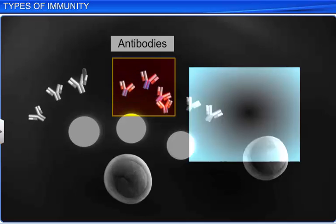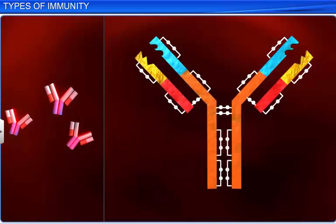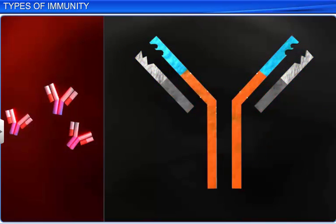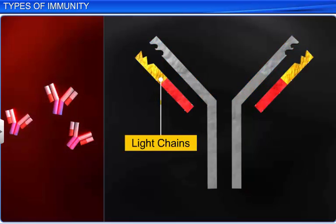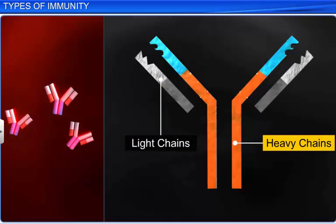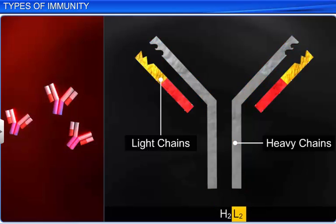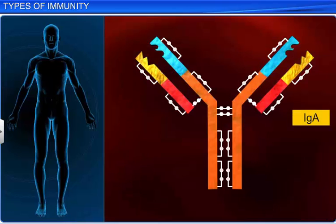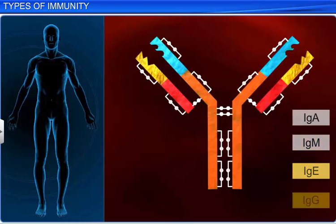Each antibody molecule has four peptide chains — two small and two longer ones. The two small chains are called light chains, while the two longer ones are called heavy chains. An antibody is represented by H2L2. IgA, IgM, IgE, and IgG are some examples of antibodies in our body.